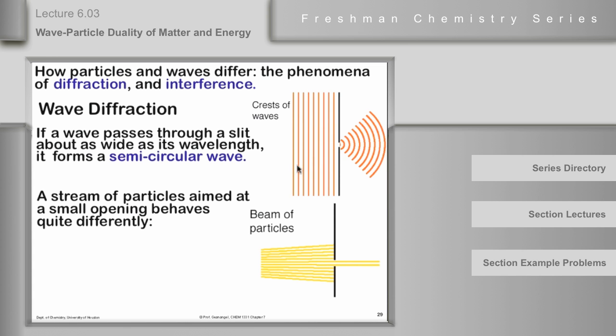If you compare this to a stream of particles, like shining a flashlight on a hole in a piece of cardboard, you get a beam. You don't get this propagation of a semicircular wave. So you can think of a beam of particles as having, this is one way a beam of particles is different from a wave, a set of waves here.